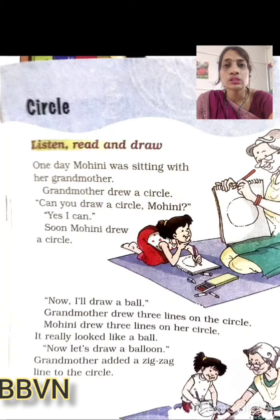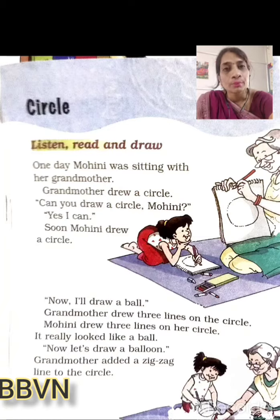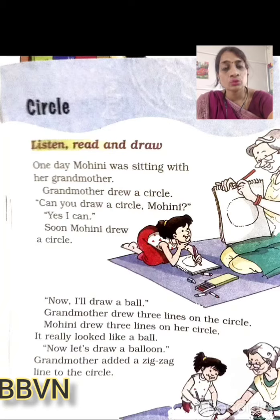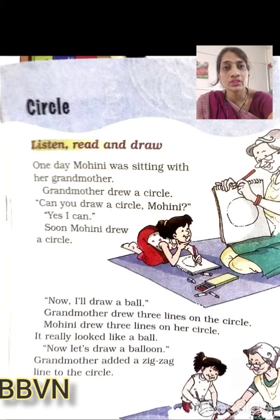Grandmother drew a circle. Grandmother — uski jo dadi maa hai — drew a circle. So unhone ek circle banaya, draw kiya. Can you draw a circle, Mohini? Toh daadima ne puchha, Mohini kya tum bhi circle bana sakti ho? Yes, I can. Mohini ne jawaab diya — haan, main bhi bana sakti hoon.